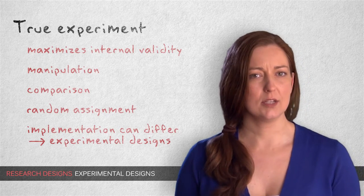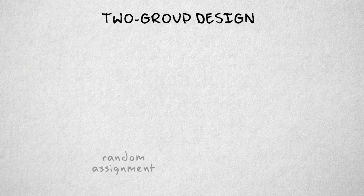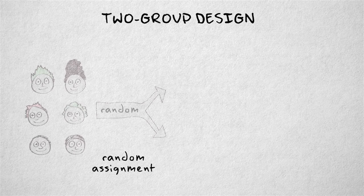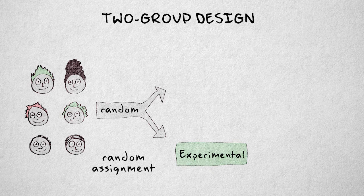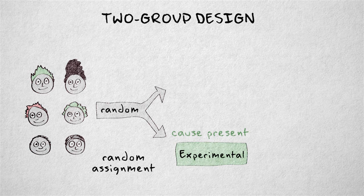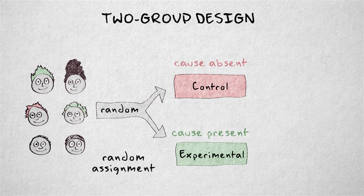The simplest design is the two-group design. Participants are randomly assigned to one of two conditions, usually an experimental condition, where the hypothesized cause is present, and a control condition, where it's absent.